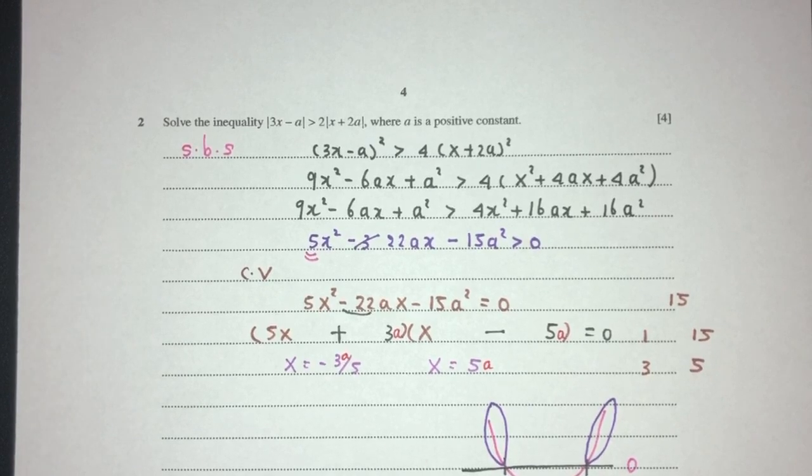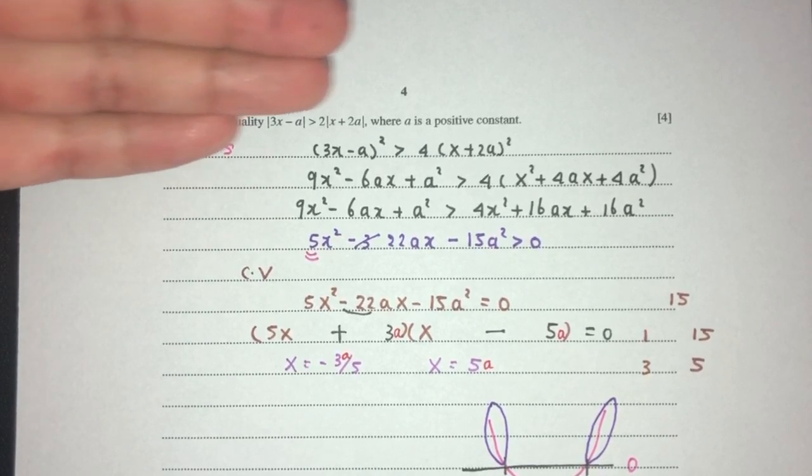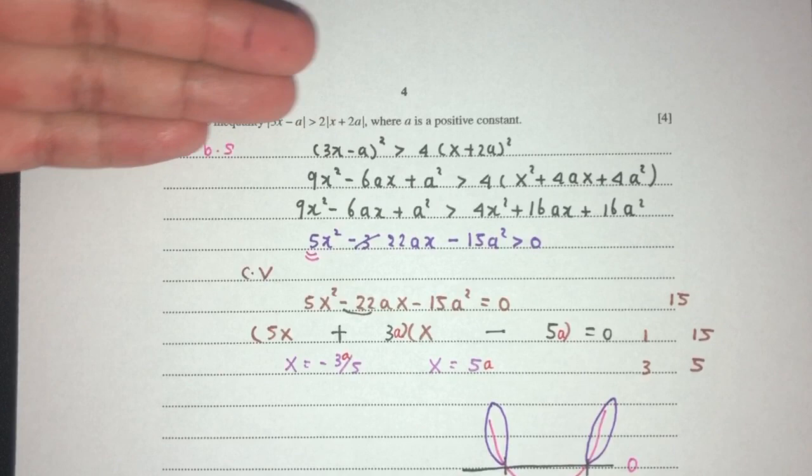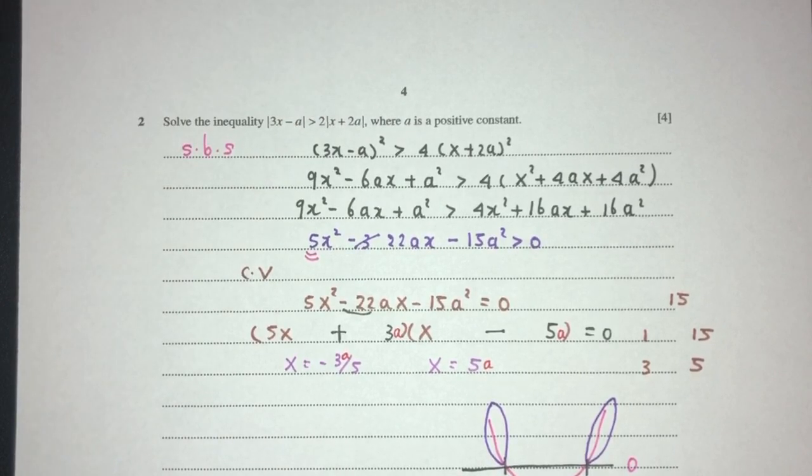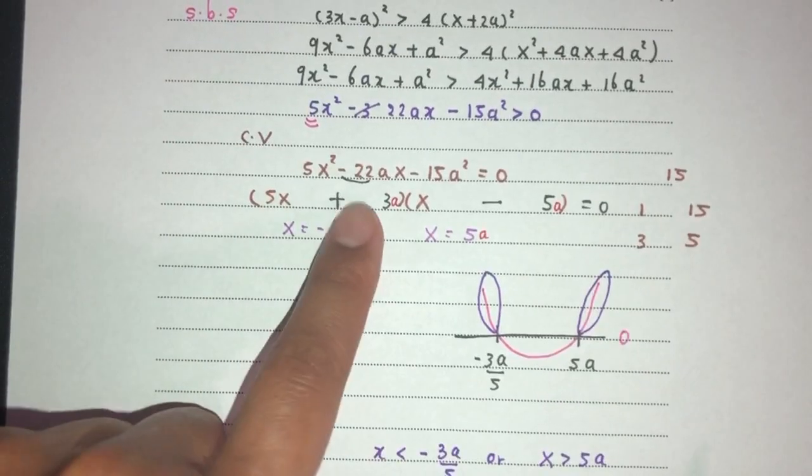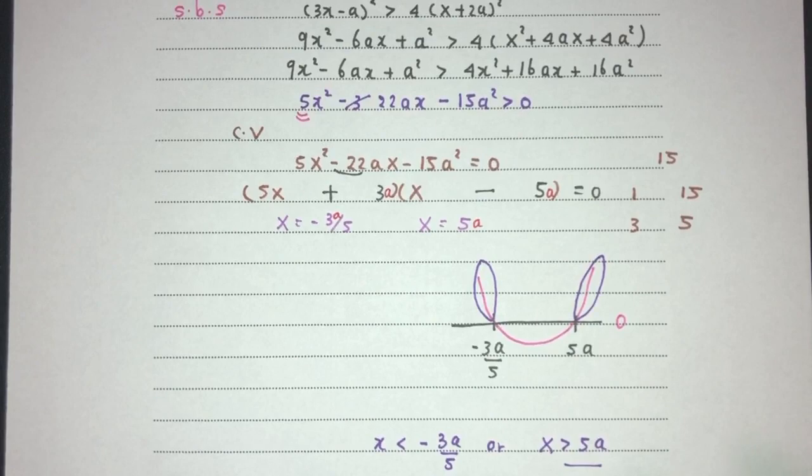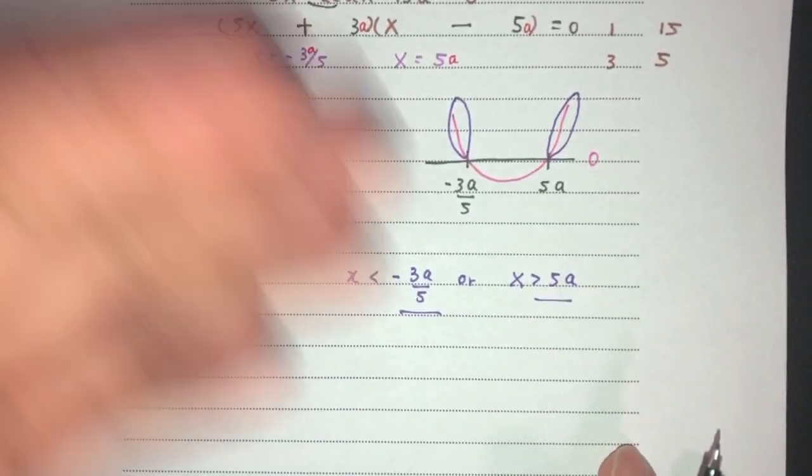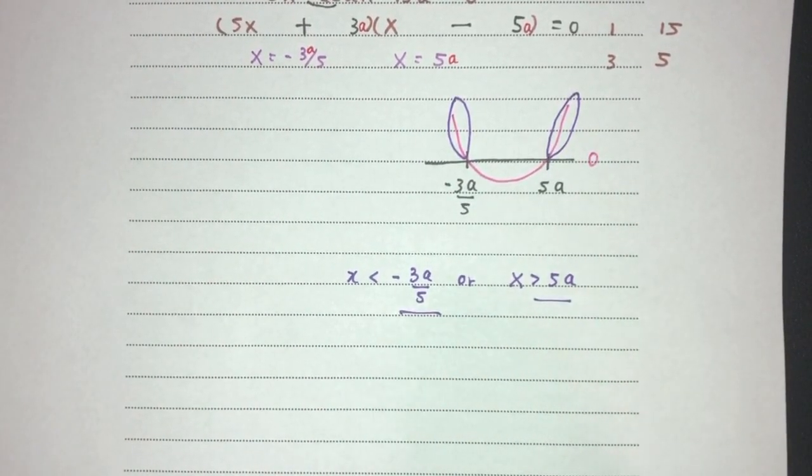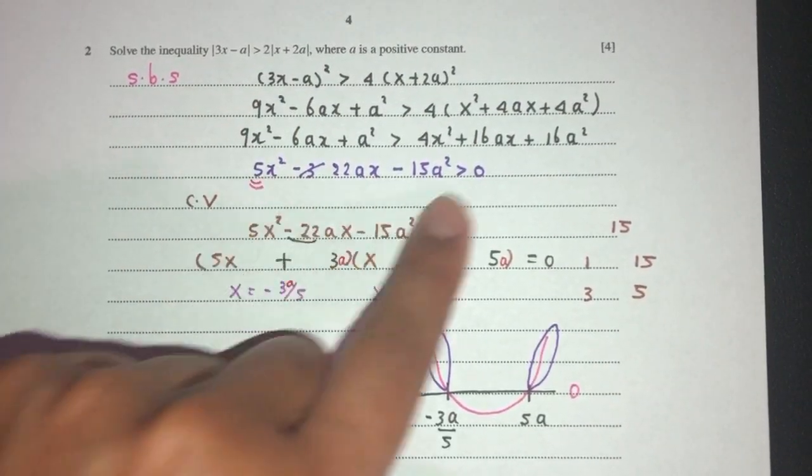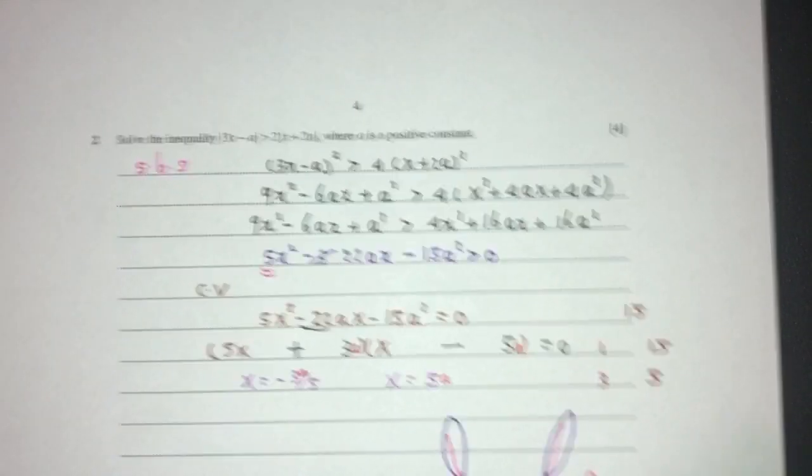One more time, very simple. We just have to understand because you have modulus on both sides and you have x on both sides, we have to square both sides. That's the first step. Eventually you will have a quadratic equation. You have to find the critical values, solve by factorization or using your formula, and then you have to use a number line to find the corresponding values that satisfy your main equation right here, more than 0. And this is your question number 2.